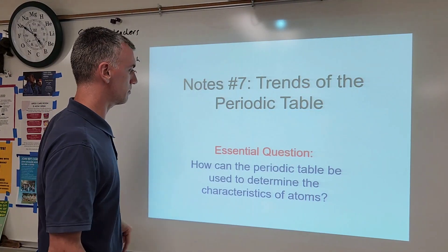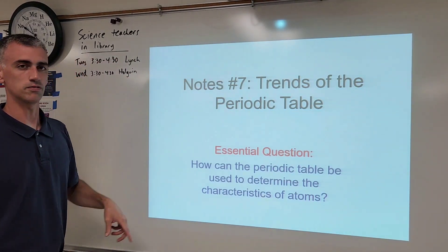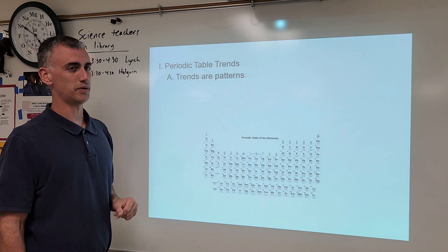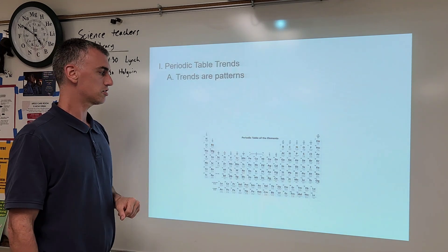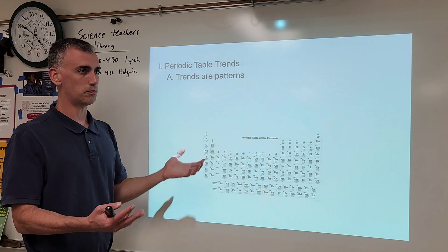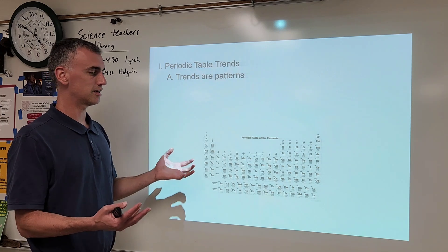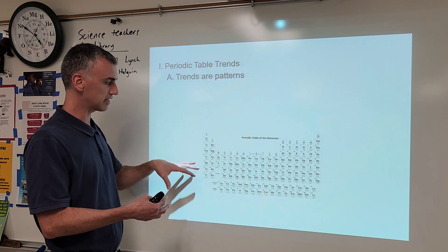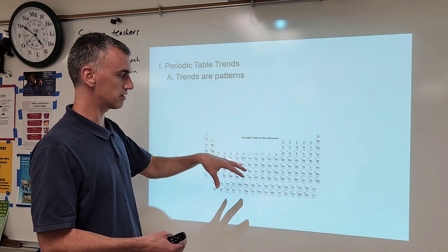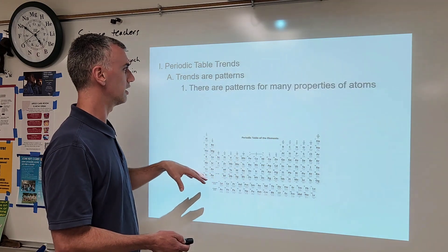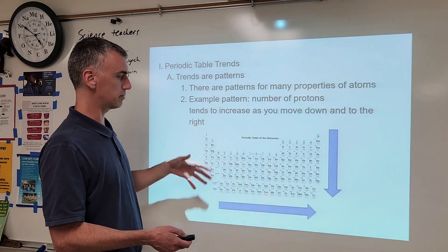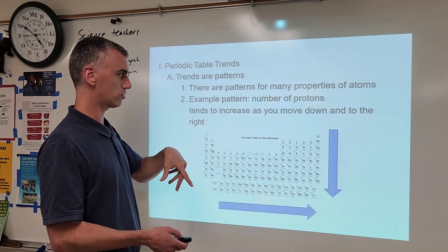Alright, let's talk about trends of the periodic table. First question is, what's a trend? A trend is a pattern. What we want to do is look at a property of elements and notice that there are certain patterns on the periodic table, where the largest amount of this property might occur in a certain corner.